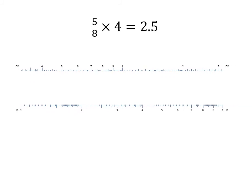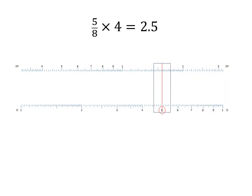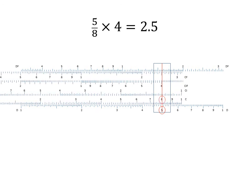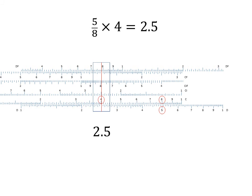Slide rulers are very handy for calculating ratios. Here I am going to calculate a ratio and multiply the result in one step. First I find 5 on the D scale, then I move the slide so the 8 on the C scale is lined up with the 5. Then I just move the cursor over to the 4 on the C scale and read the final answer on the D scale.